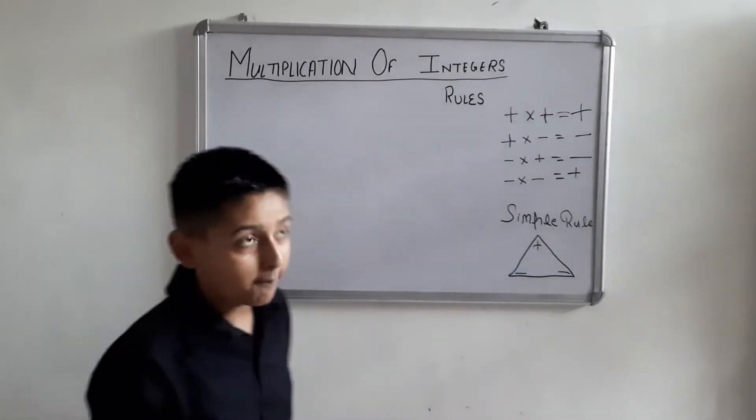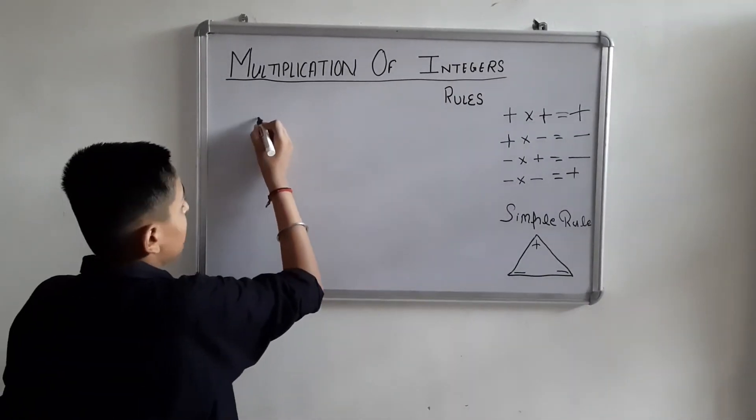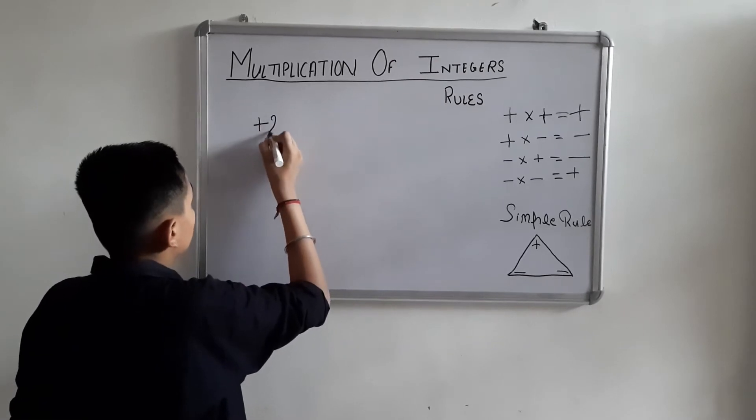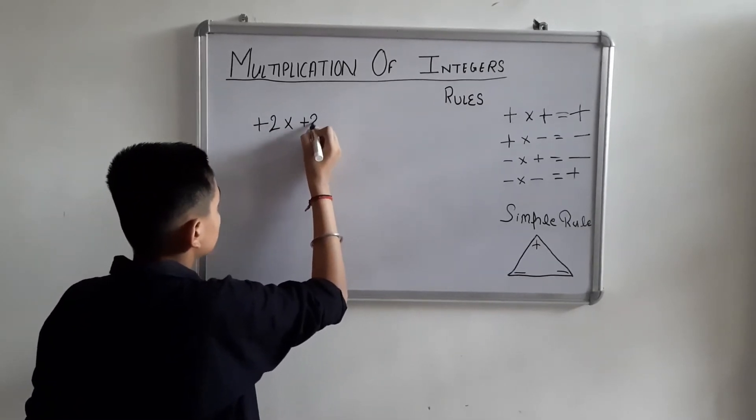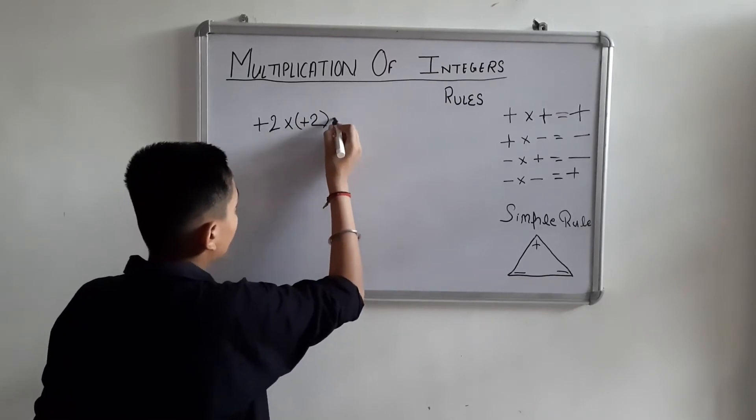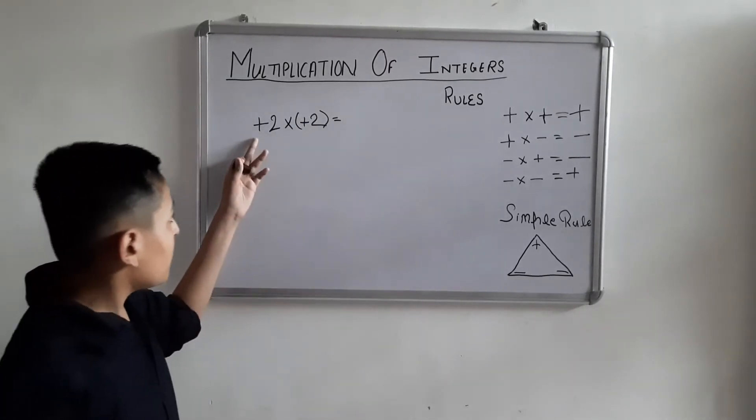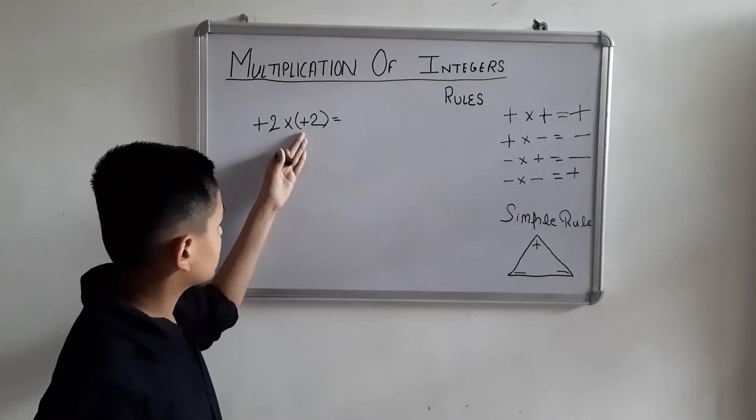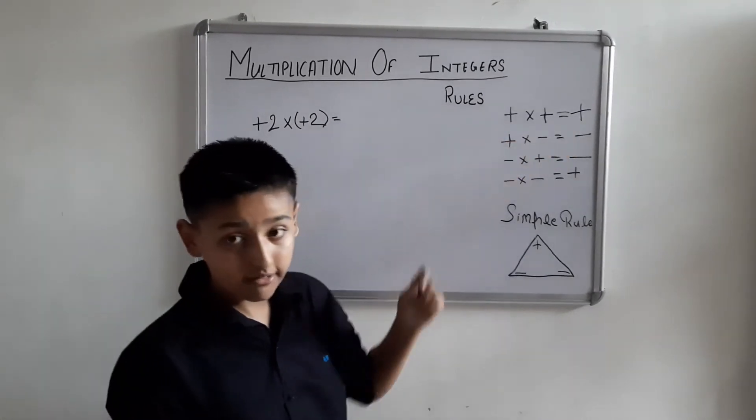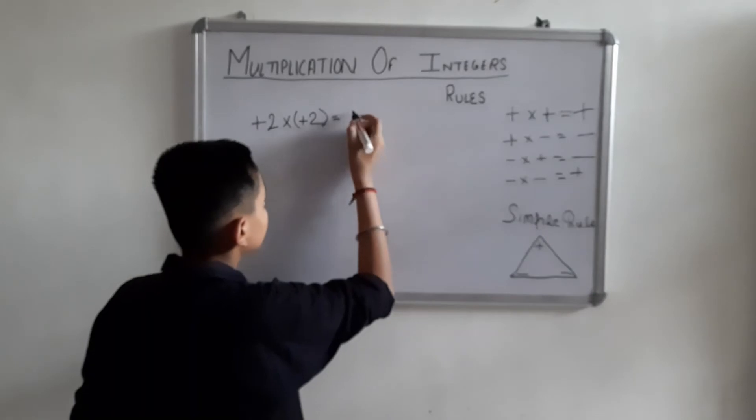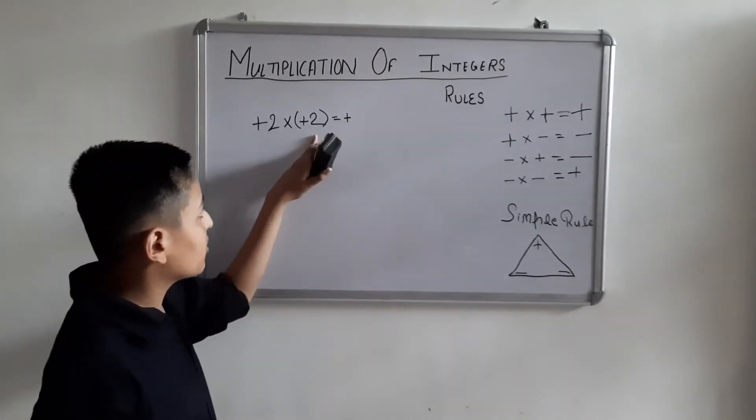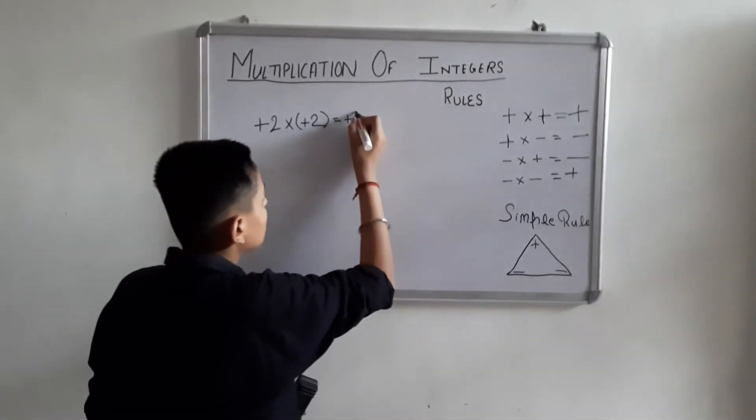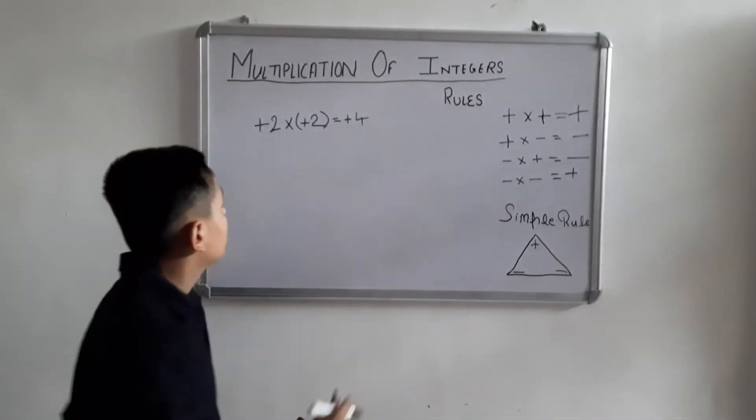Let's take some examples. Plus two into plus two. Plus into plus is always plus, so we have the plus sign. Two into two is four, so the answer is plus four.